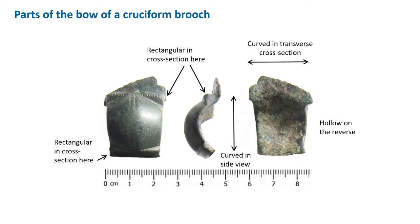Moving on to the bow. This is often hardly described at all and the vocabulary available isn't great — the problem is how to describe the shape, while decoration is easier. Before the PAS, people used to call this a faceted bow, but this is a bit vague. It's best to say that there is a short area with rectangular cross section at the top and bottom, and in between the bow is curved in cross section both in side view and in transverse cross section. You can note whether it's hollow on the reverse, C-shaped or V-shaped in cross section, or if flat on the reverse, triangular or semi-circular. There are a lot of ways of describing it, so just have a go.